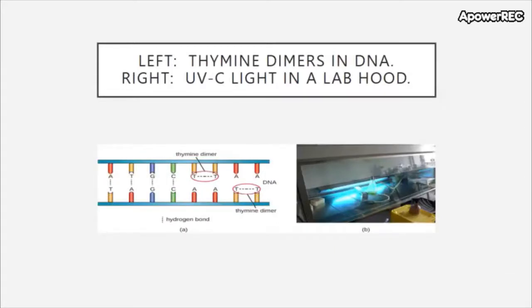Here is a visual representation of what we discussed. You can see double-stranded DNA with thymines starting to interact with each other, forming what is known as a thymine dimer. The other image shows a hood being exposed to UV light — that type of UV light is called UVC, which is the extra-short wavelength form.